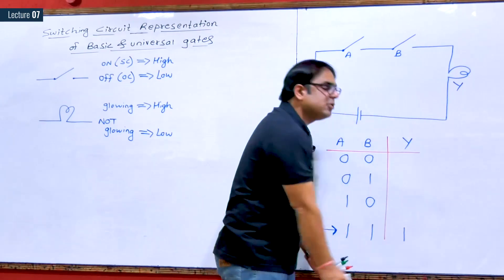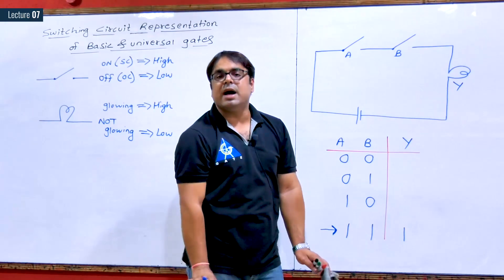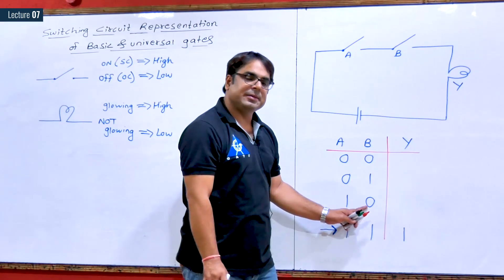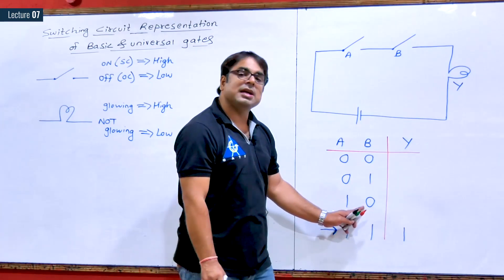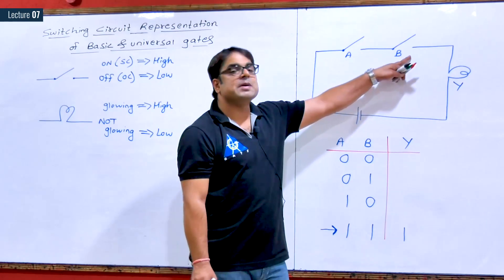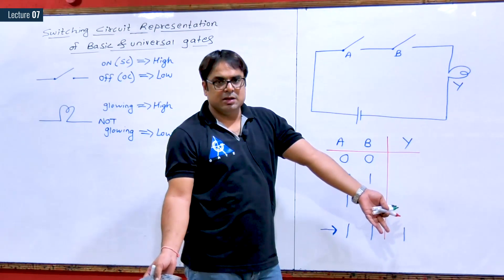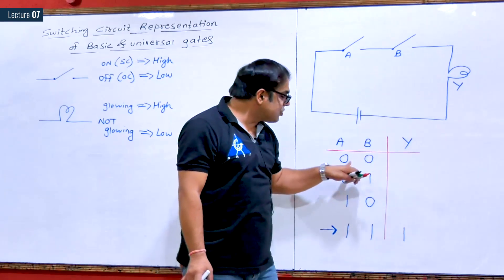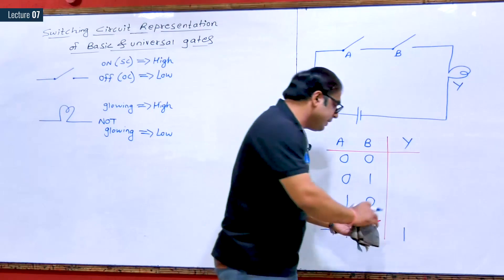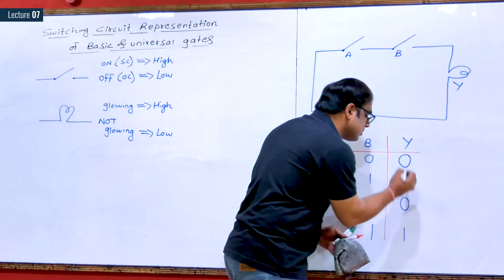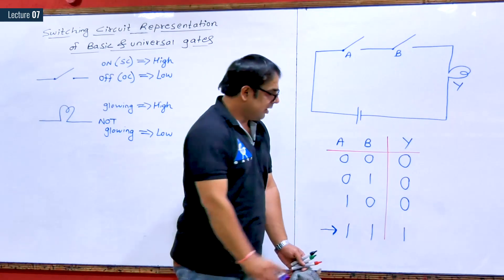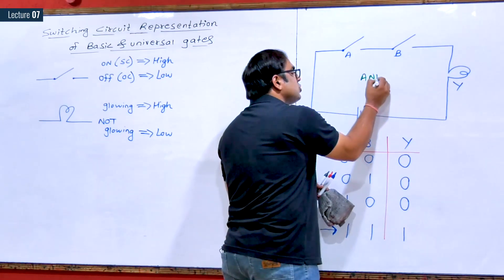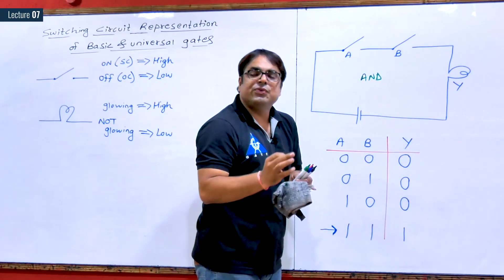When the bulb is glowing, the output is represented as logic 1 (high). If any switch is open-circuited, current cannot flow, the bulb is not glowing, and the output is logic low. This represents an AND gate — this is the switching circuit representation for the AND gate.